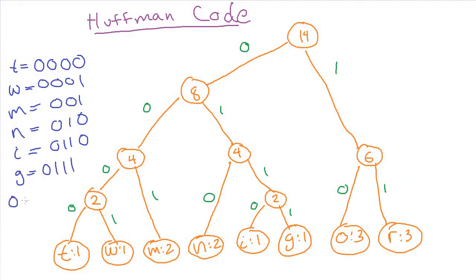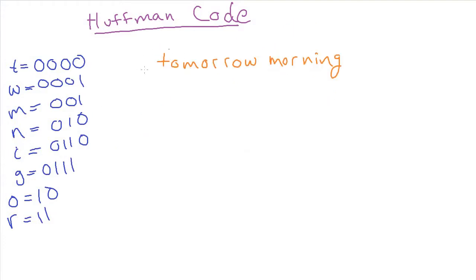Then we have O, which is just one zero, and R, which is just one one. So the things that occurred the most time, the O and the R here, got even shorter codes, only two bits. Now that we have this encoding scheme here, we can go ahead and figure out how we would actually compress the string "tomorrow morning." We're going to disregard spaces. That wasn't part of the code that we built.